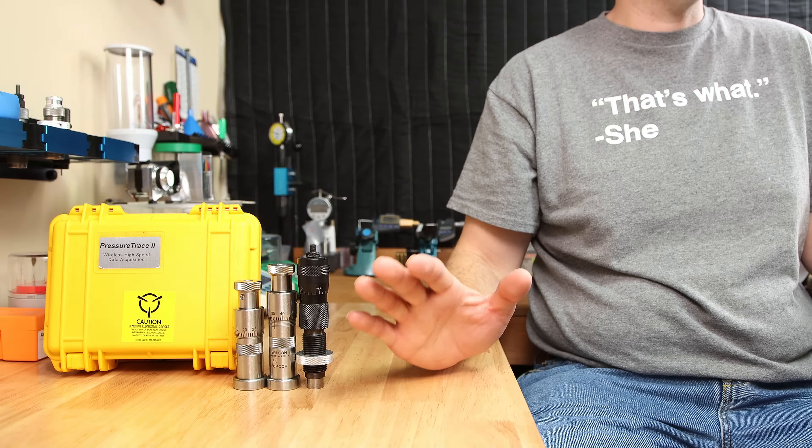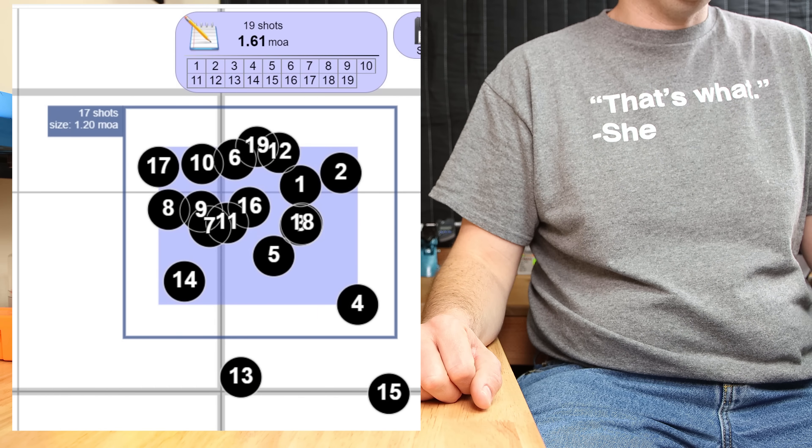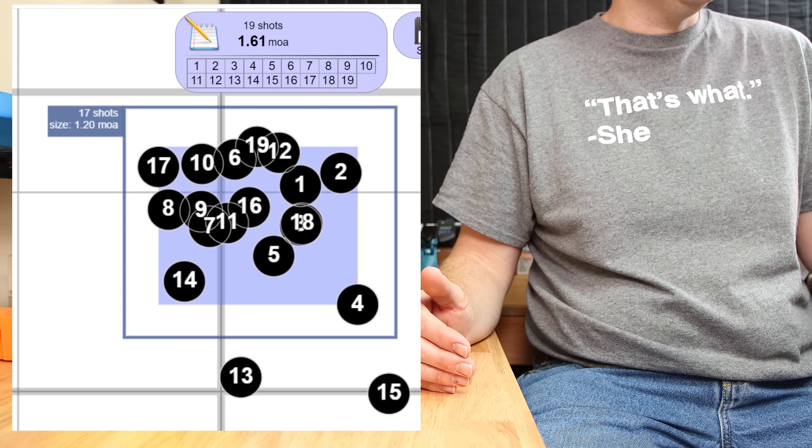But did changing our cartridge overall length change our point of impact significantly? We can't make any great conclusions with only having one sample per data point, but our goal here mostly is looking for pressure. But if we look at this entire group of 19 rounds, removing rounds 13 and 15 took our group from 1.6 MOA down to 1.2 MOA.